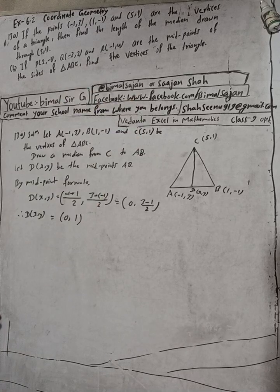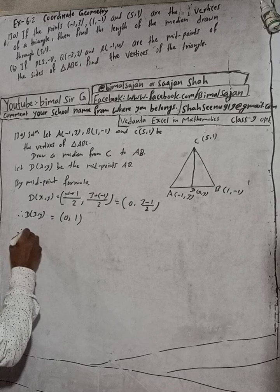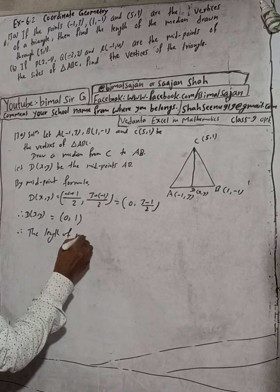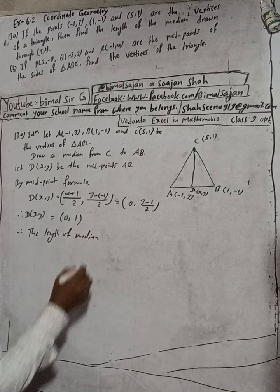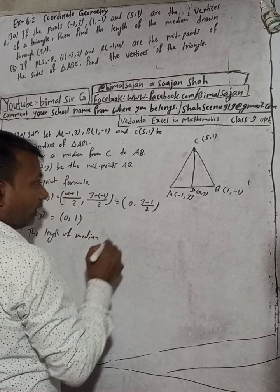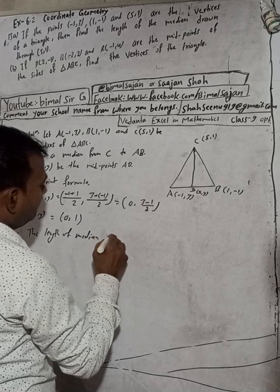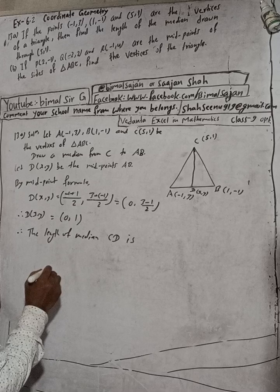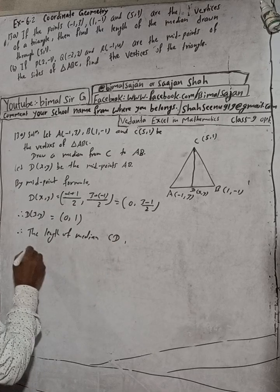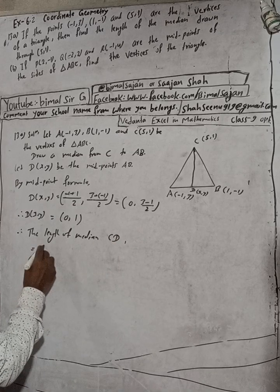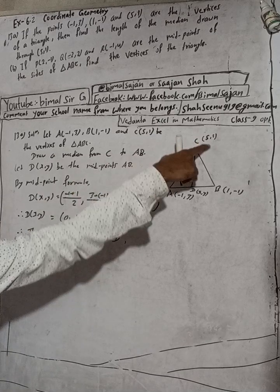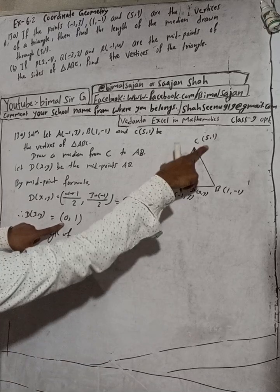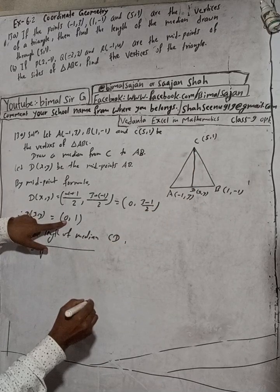Now find the length of the median. Therefore, the length of the median CD is equal to the square root of: (5 minus the x-value of D, which is 0) squared plus (1 minus the y-value of D) squared. D is actually (0, 1).